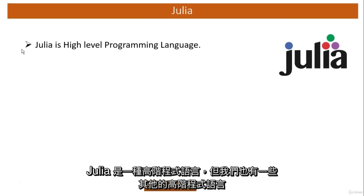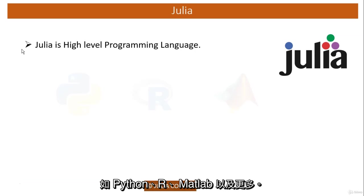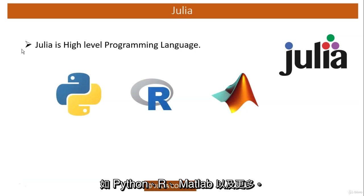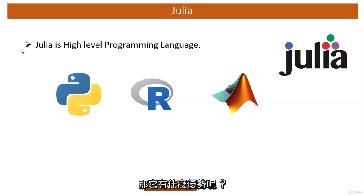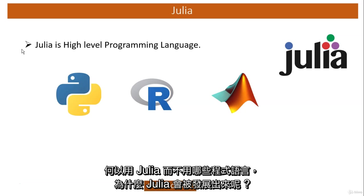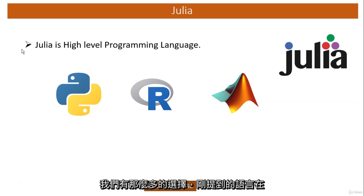Julia is one of the high-level programming languages, but we have a number of other high-level programming languages like Python, R, MATLAB, and many more. So what is the advantage Julia will give over those high-level programming languages, and why was Julia even developed? Because we have a number of other options that are available.